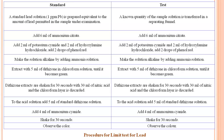The dithizone extracts are shaken for 30 seconds with 30 ml of nitric acid, and the chloroform layer is discarded. To this acid solution, add 5 ml of standard dithizone solution and 4 ml of ammonium cyanide, then shake for 30 seconds — a color is formed. This completes the procedure for preparation of the test solution.